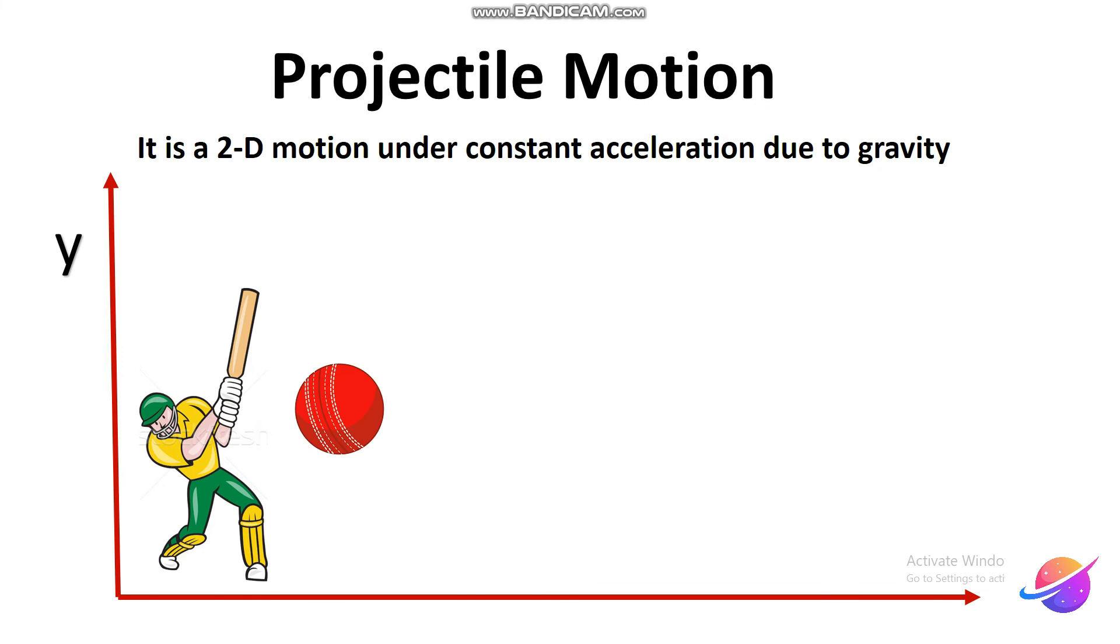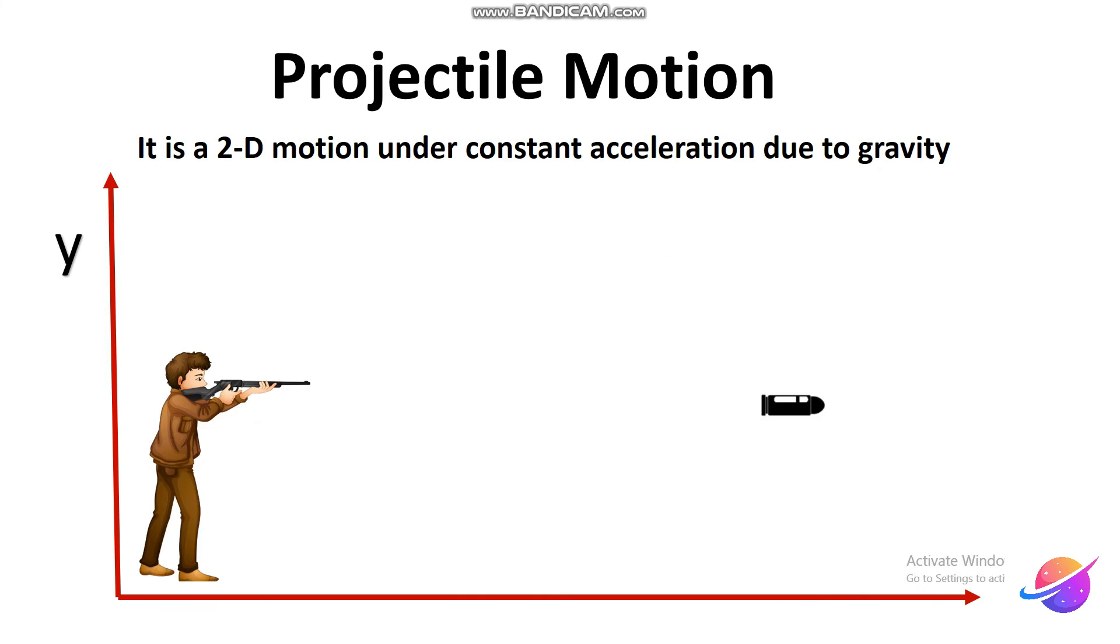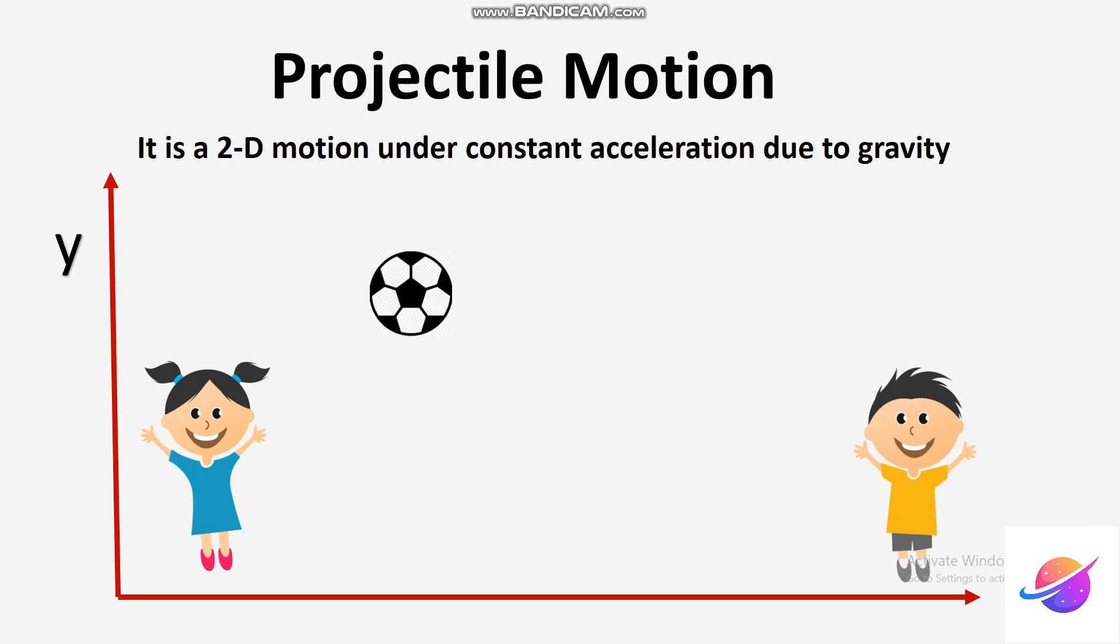Like Messi kicking football. Like a batsman hitting a ball. Like a person shooting a gun. Like kids playing catch-catch. All examples have one thing in common. And that is they give the ball initial horizontal velocity and leave the rest of the motion for gravity.